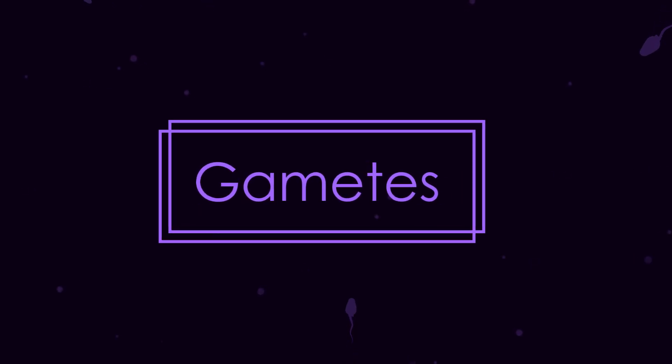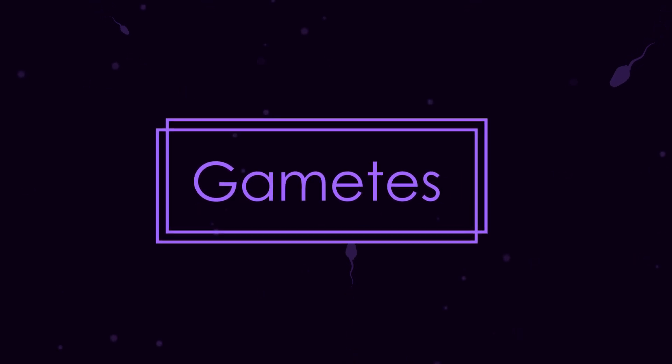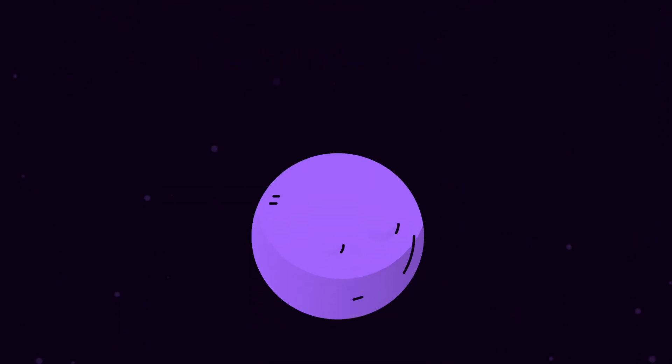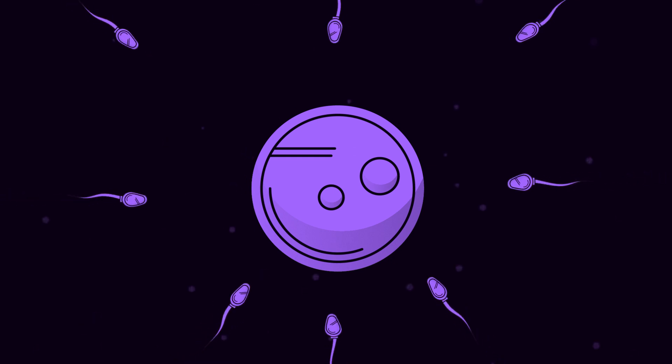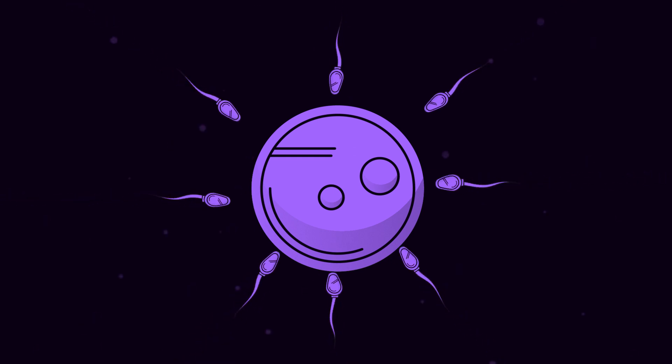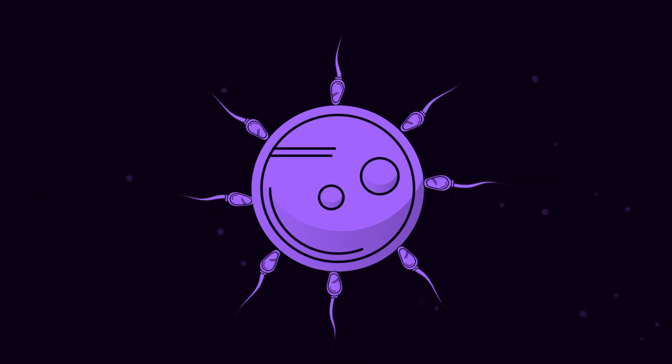Gametes are reproductive cells, or sex cells. So female gametes are the ova, or egg cells, and the male gametes are the sperm cells.